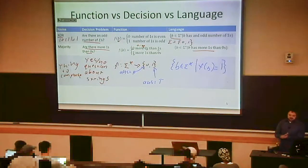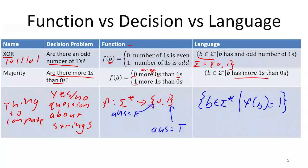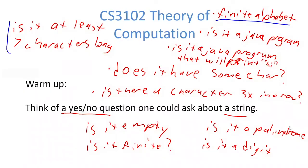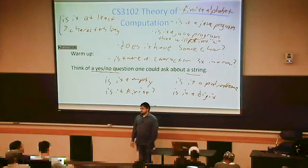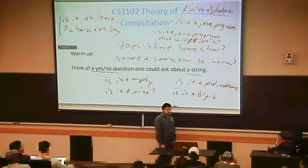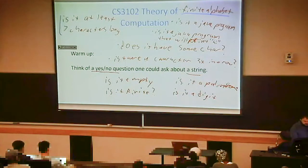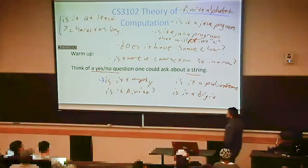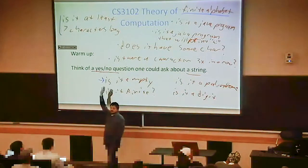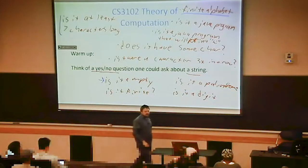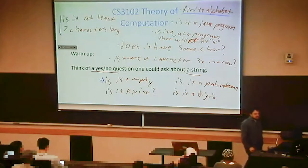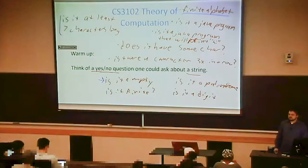This means we could think of XOR as being the language of all strings with an odd number of ones, and majority as the language of all strings with more ones than zeros. For the question 'is it at least seven characters long?', as a language that would be the set of all strings that are seven or more characters long. For 'is it empty?', only one string is in that language — the empty string is the only one for which the answer is yes.